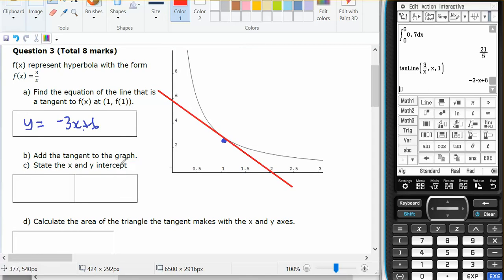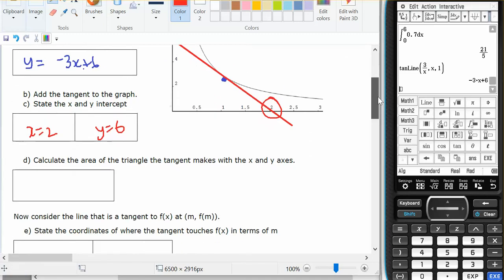State the x and y intercepts. Well, I can see that x equals 2 and y equals 6 are going to be the x and y intercepts.